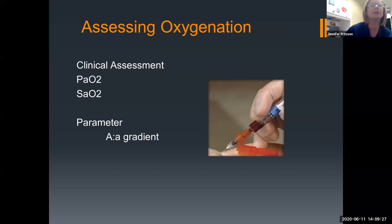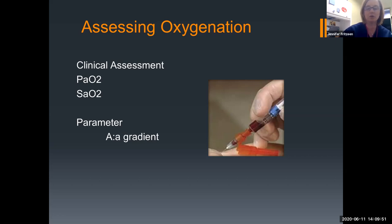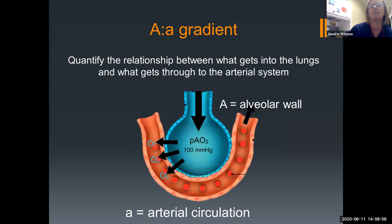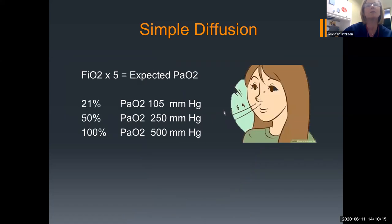To assess our oxygenation, we're going to do good clinical assessment. Look around their mouth — are they nice and pink? Do they look well perfused? We have our pulse ox, though I'm not a huge fan of it — it helps us with some trends, but buyer beware. If you do a blood gas, we can measure our PaO2. We can also use the A-a gradient — the big A is the alveolar wall and the little a is the arterial circulation — to look at what gets from the lungs into the arterial system. It measures simple diffusion, though it's not an exact number.